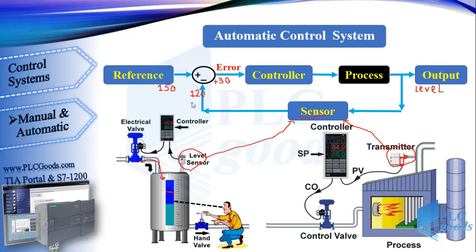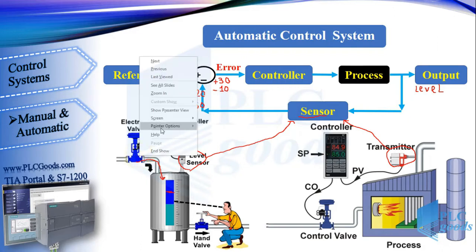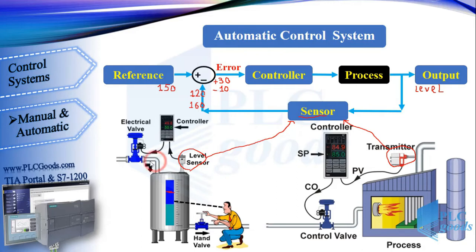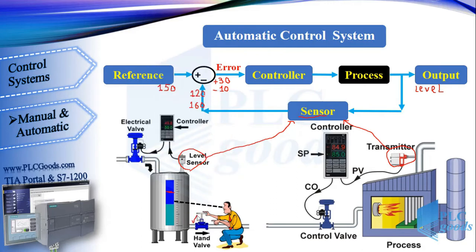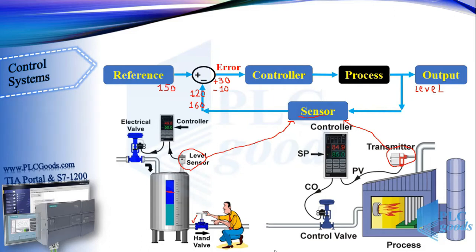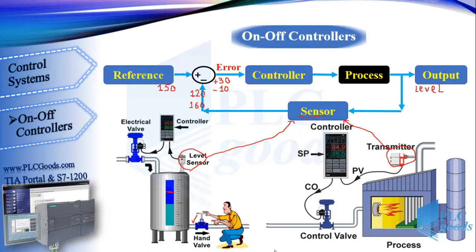If the liquid level reaches 160 centimeters, depending on the amount of error, the controller will decide to turn off the inlet valve, or even open the outlet valve. In this example, how the valves are turned on and off determines the type of automatic control system. Let's start with the simple on-off controller.